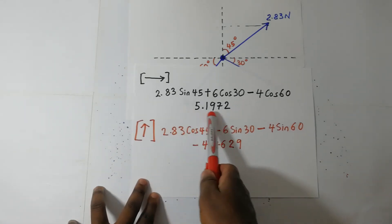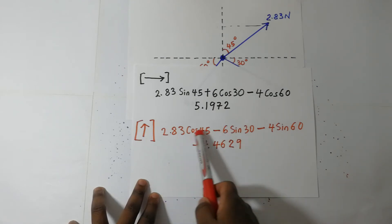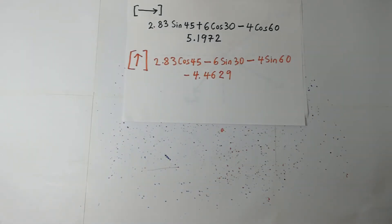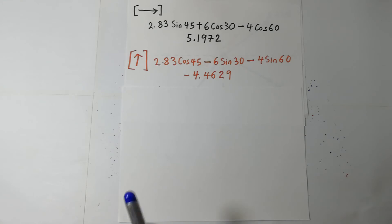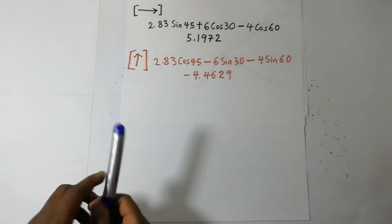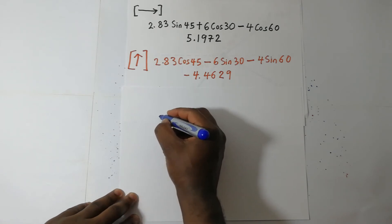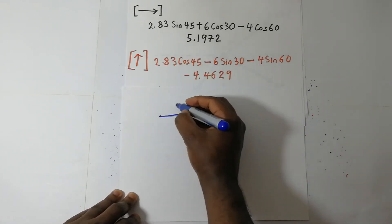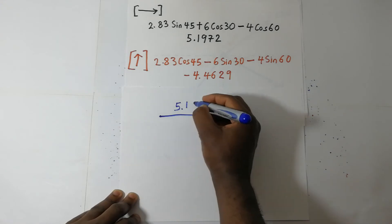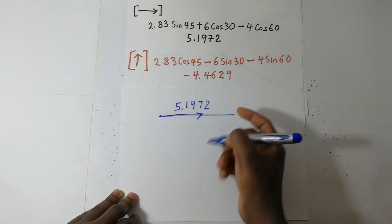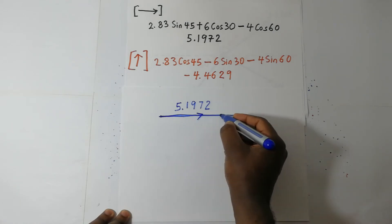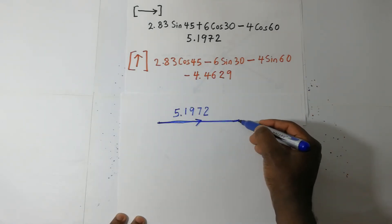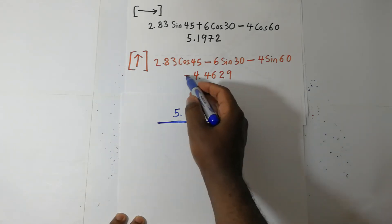So along the X we have a positive value, along the Y we have a negative value. From this, we go ahead and draw our triangle of forces. The X value is positive, so we know this is going to start from here and we move in the positive direction of the X axis — it is 5.1972. We've moved in the positive direction of the X axis like that. Then the Y is negative 4.462, so from here we move downwards, not upwards, since it is negative.